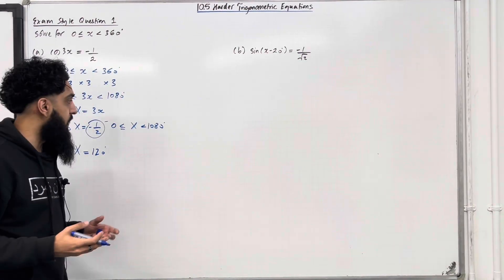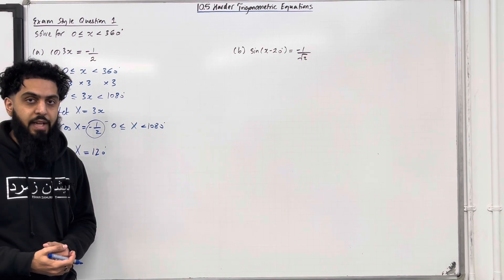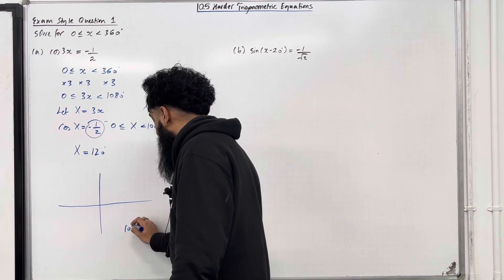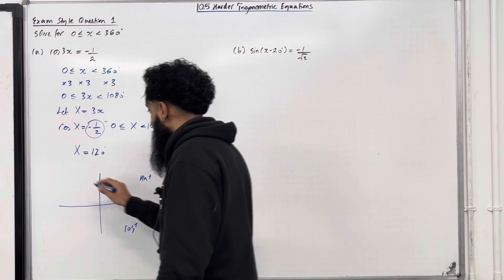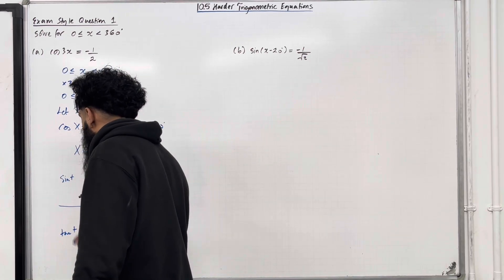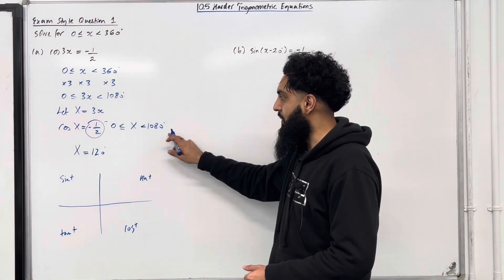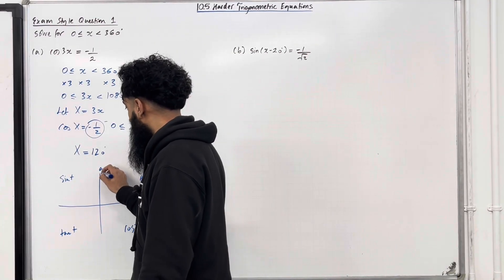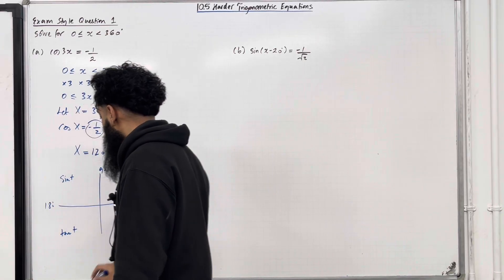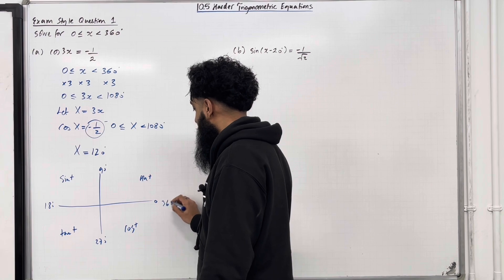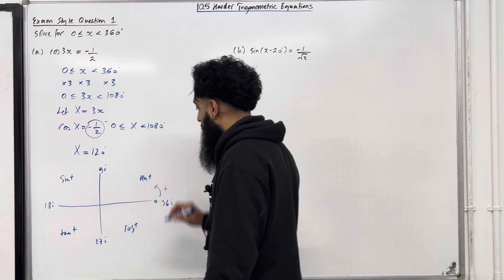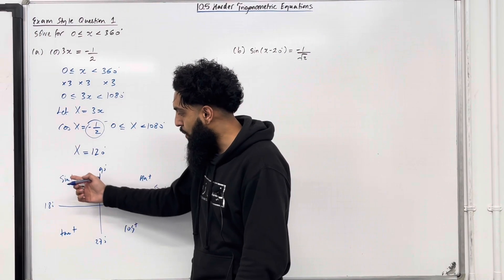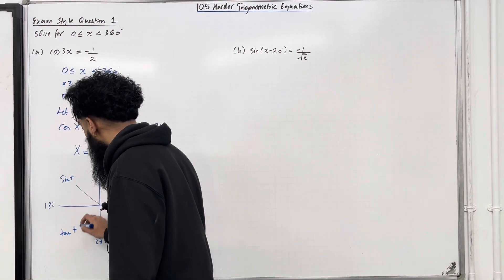Now to work out all the other solutions for capital X in this interval, we have to draw a CAST diagram. Cosine is positive, all is positive, sine is positive, and tan is positive. We are solving for 0 to 1080, so I'm going to label 0, 90, 180, 270, and 360 degrees on the CAST diagram. Going anti-clockwise measures positive angles. Cosine is negative in the sine quadrant and the tan quadrant, so we can draw two lines.